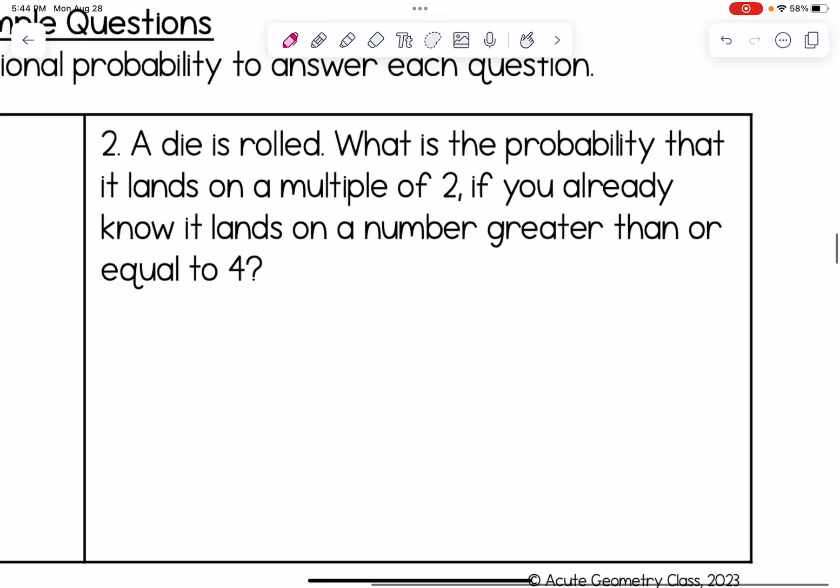Number two, a die is rolled. What's the probability that it lands on a multiple of two if you already know it lands on a number greater than or equal to four? Well, this is similar to our example above. We know the sample space for rolling a die is the numbers one through six.